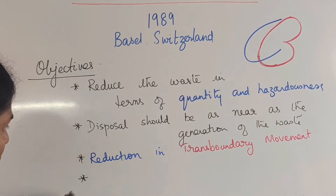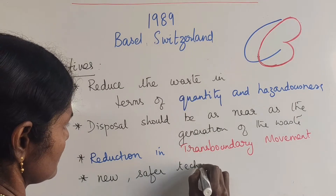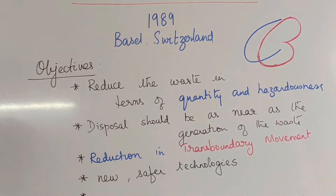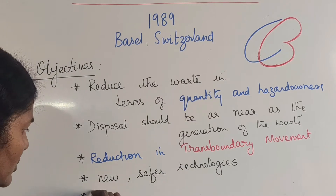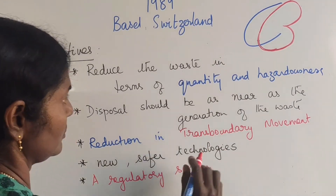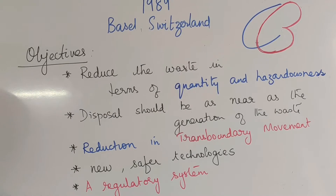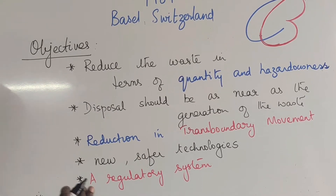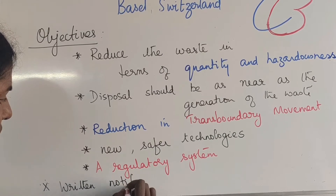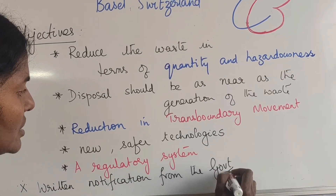They could also develop new, safer techniques or technologies to avoid hazardous materials. Most important of all, they need a regulatory system to monitor all transportation. According to the Basel Convention, if they want to transport waste, they have to have a written notification from the government of the country to which it is being exported.